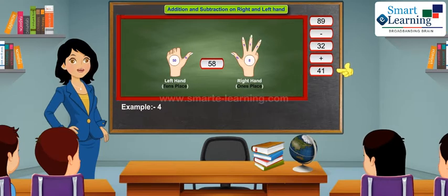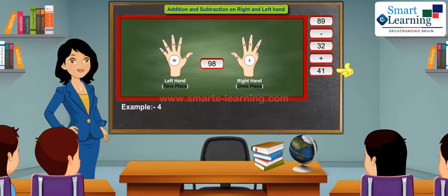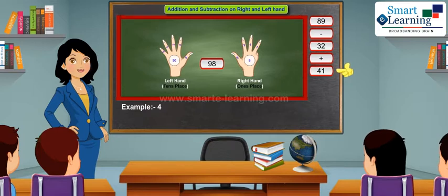In order to add 41, take 1 more finger on your right hand and 4 fingers on your left hand. Read the number. Your answer is 98.